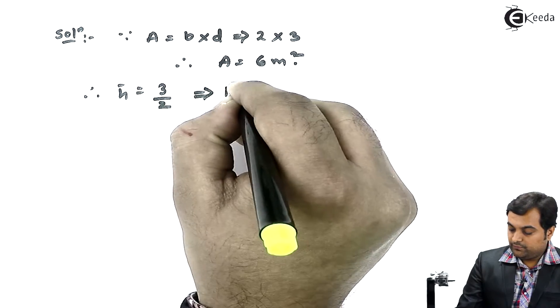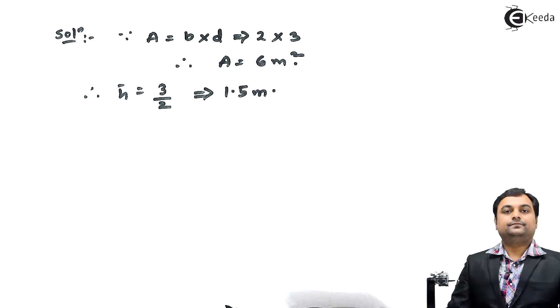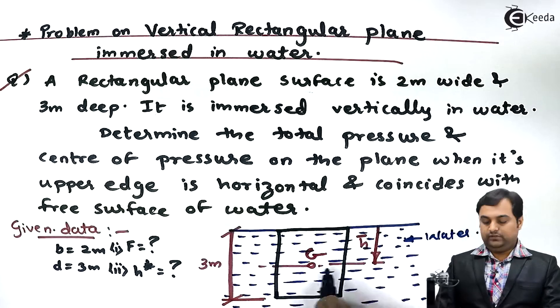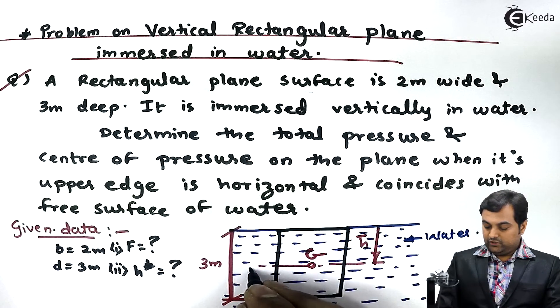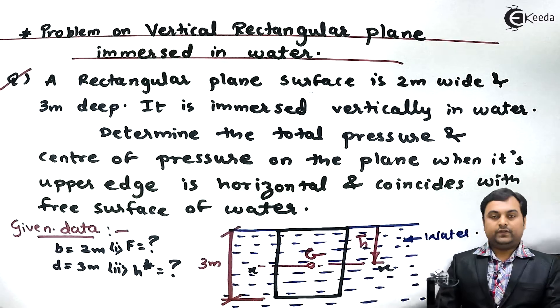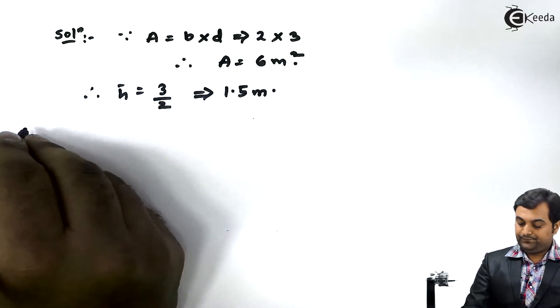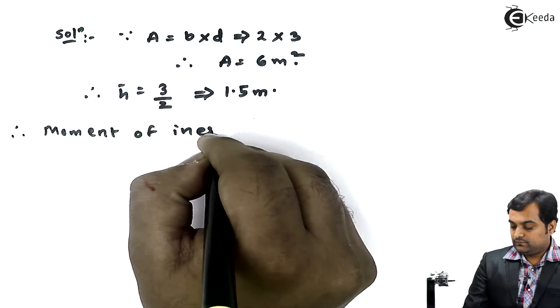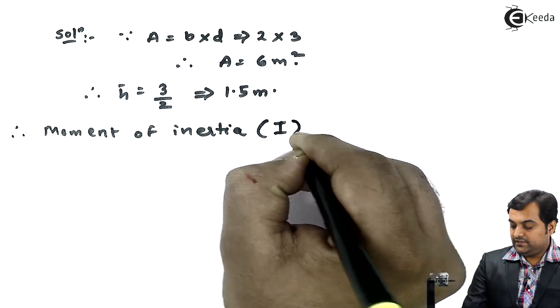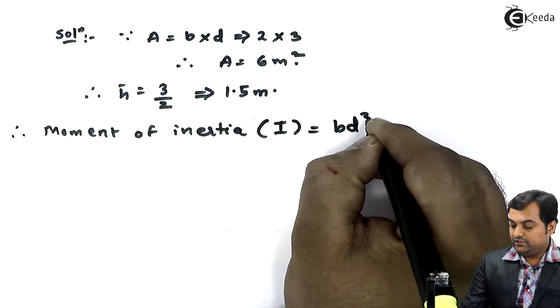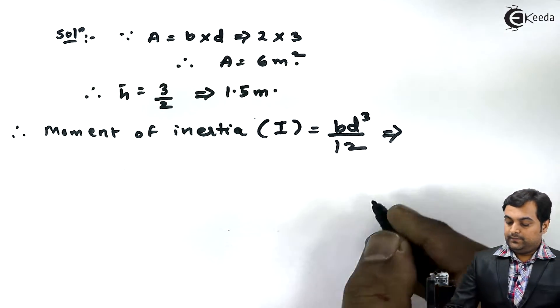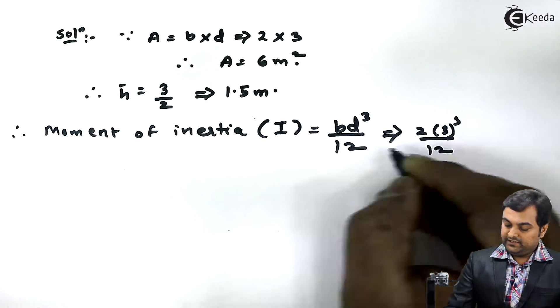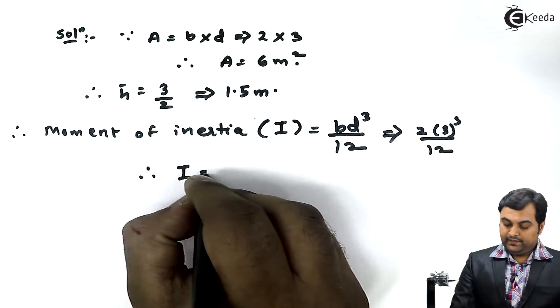Next, since we know the centroid, I'll calculate moment of inertia about this horizontal axis. Therefore moment of inertia I, about horizontal, is bd³ by 12. B is 2, d is 3, so my answer comes out to be...